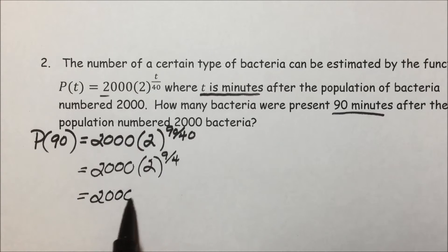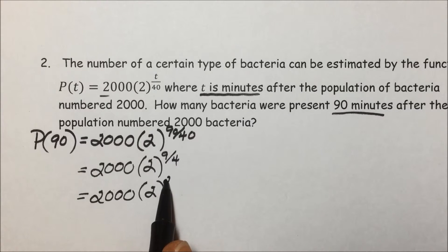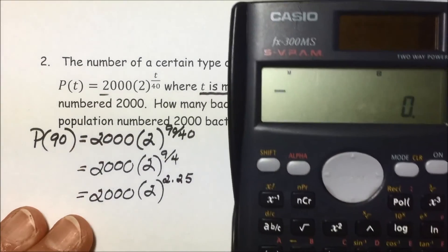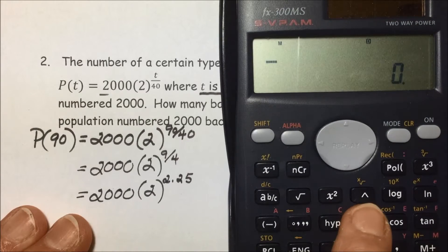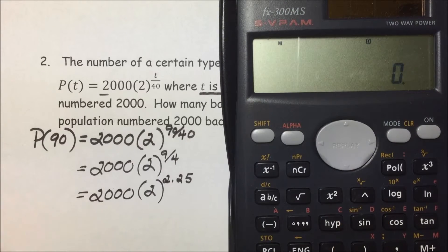And most times, instead of dealing with a fraction, we can convert it to a decimal. So 9 divided by 4 is equivalent to 2.25. Now using this model calculator, the power key here is the caret, this upside down V.